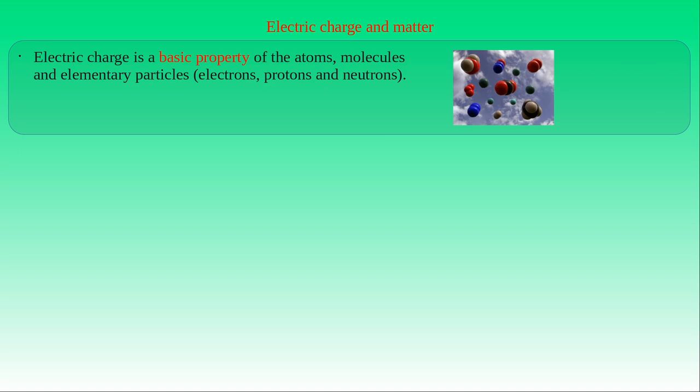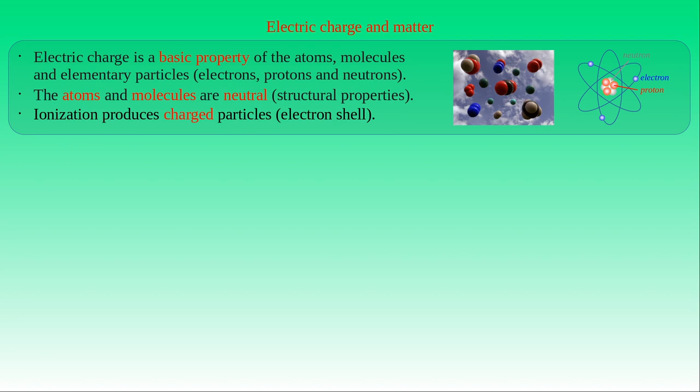Let us discuss the modern interpretation of the phenomenon of electricity based on atomic physics. This interpretation provides us deeper knowledge on the relation between electric charge and matter. In modern physics, electric charge is a basic property of atoms, molecules, and elementary particles such as electrons, protons, and neutrons. Atoms and molecules are electrically neutral due to their structural properties. The ionization of atoms and molecules modifies their electron shells and transforms them into ions, which are charged particles.